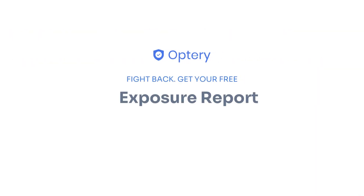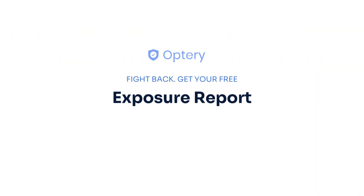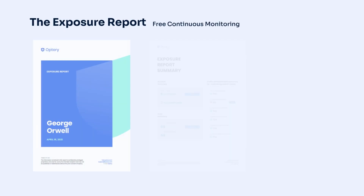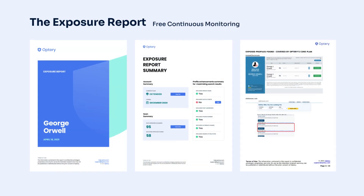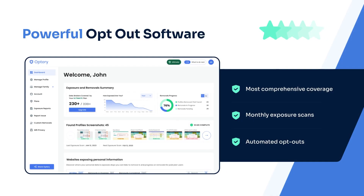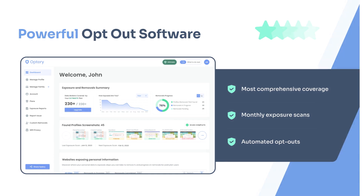That is why Optory offers the free exposure report. The exposure report shows screenshots from sites that have your data, with links to let you see that data right on the site. Use the exposure report and our how-to guides to opt yourself out for free, or sign up for an Optory paid plan and Optory will handle the monitoring and removals for you and your family members.